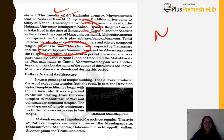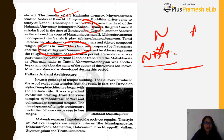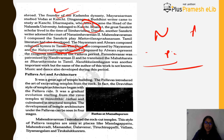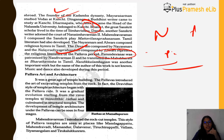Tamil literature also developed. The Nayanmars composed the Devaram and the Alvars composed the Nalayira Divya Prabandham — remember this book, which contains rich religious literature of the Pallava period. Perundevanar, patronized by Nandi Varman II, translated the Mahabharata into Tamil as Bharata Venba. He also worked on another important work, the Nandi Kalambagam. Music and dance also developed during this period.